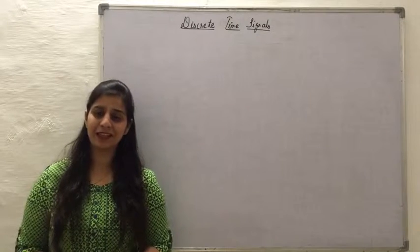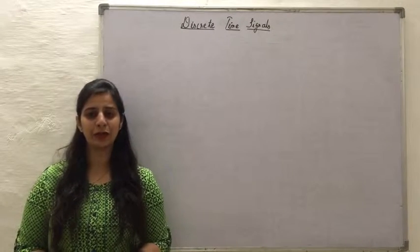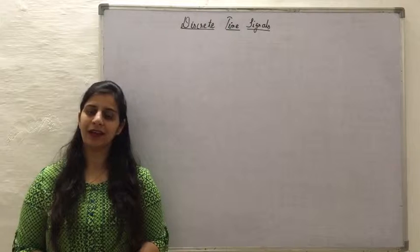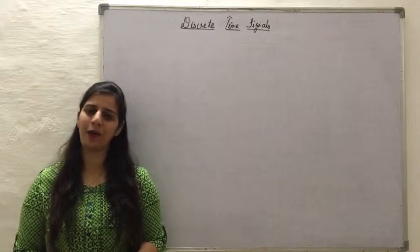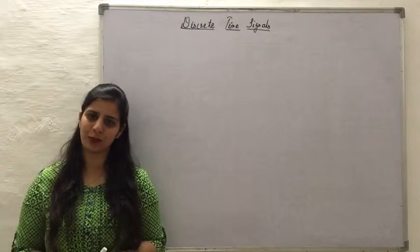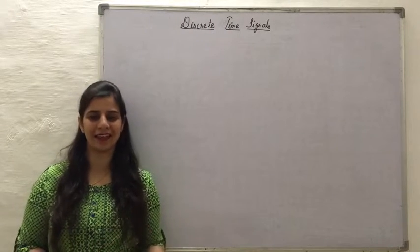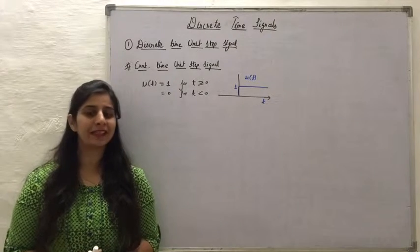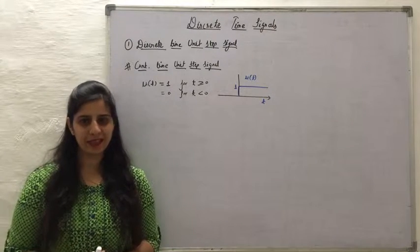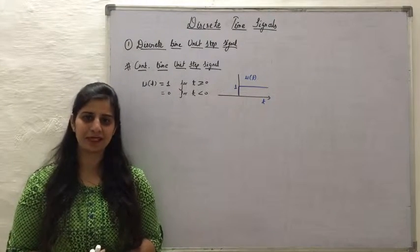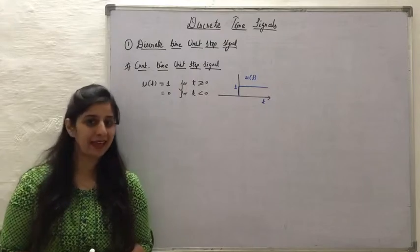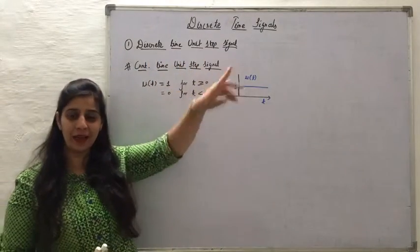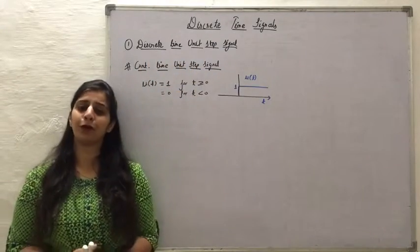For each signal, I'll show how it appears in the continuous time domain and how it changes when expressed as a discrete time signal. We'll start with the first important discrete time signal: the discrete time unit step signal.